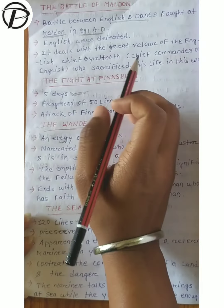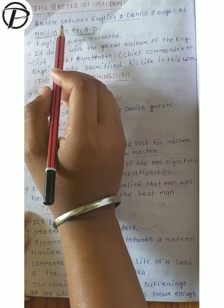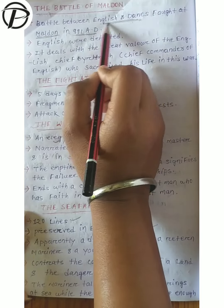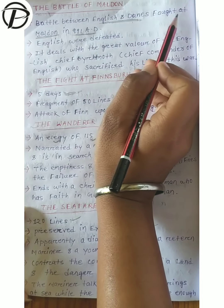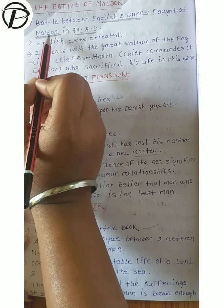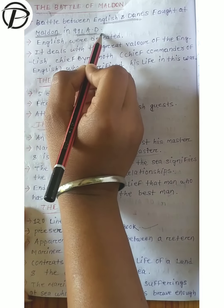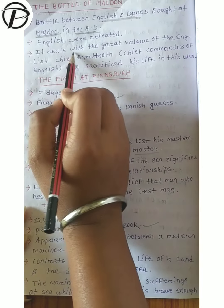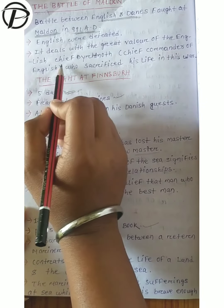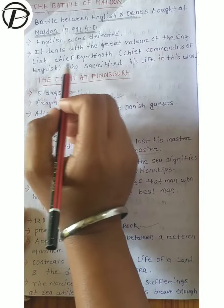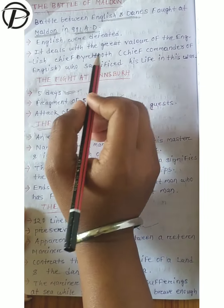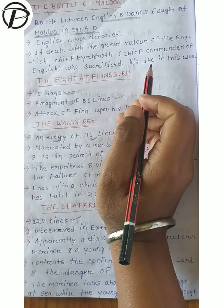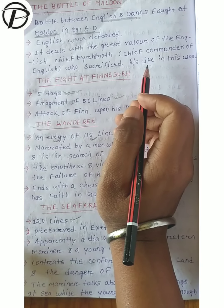The next important work is the Battle of Maldon. In the Battle of Maldon, it is between the English and Danes and it was fought at Maldon in the year 991 AD. In this battle the English were defeated. It deals with the great valor of the English chief Byrhtnoth - his adventures and his bravery are described, including how he sacrificed his life in the war.